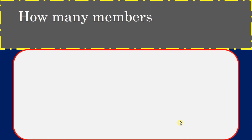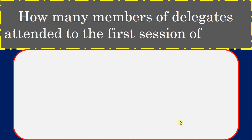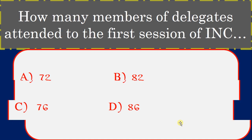How many delegate members attended the first session of the INC? Options: 72, 82, 76, 86. Correct answer: 72.